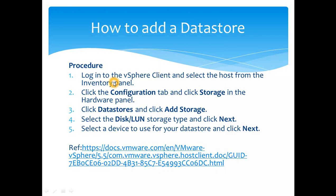To add a data store, you log into your vSphere client, go to your inventory pane, click the configuration tab, and click Storage in the hardware panel. In the newer versions, you click on the storage tab and from there click Add Storage. Then you select a disk or LUN storage type, click Next, select a device, give it a name, and proceed. This is reference content from docs.vmware.com — the live demo is coming up shortly.